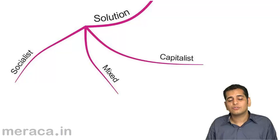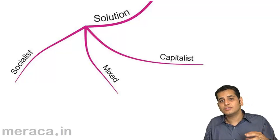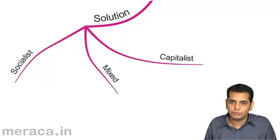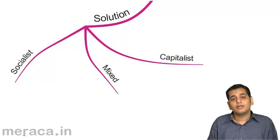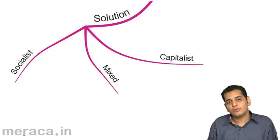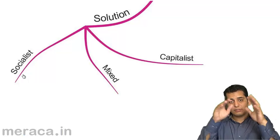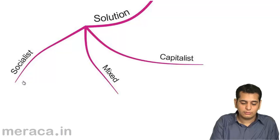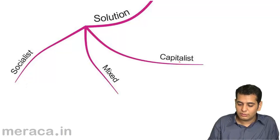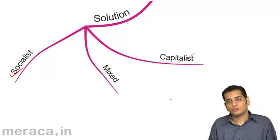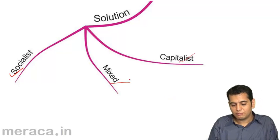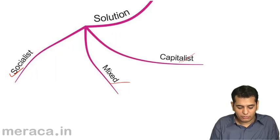And in our last topic, we studied the solutions to the central economic problems. There are three approaches to solving the economic problems from the point of view of a nation. The first approach is the capitalist approach, the second approach is the socialist approach, and the last approach is the mixed economy approach.